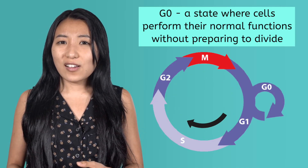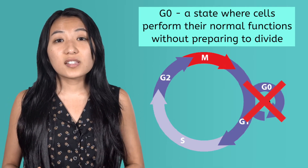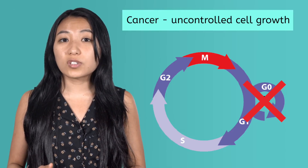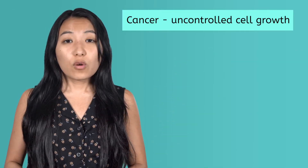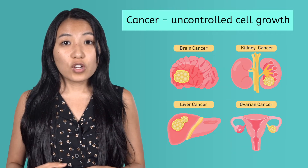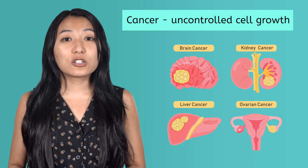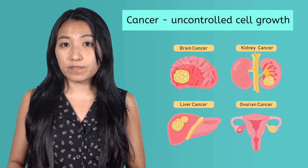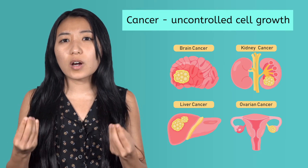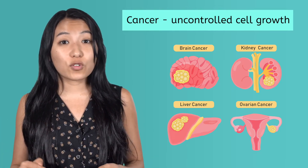Sometimes, however, cells miss their cue to exit the cell cycle. This leads to a very serious disease called cancer, which is uncontrolled cell growth. When this occurs in solid tissue like organs or bones, tumors form — masses of rapidly dividing cells that can impede normal function in the body. Studying the cell cycle has helped scientists understand more about this disease, which has led to a broader range of treatment options for cancer patients.